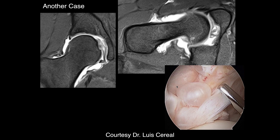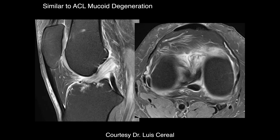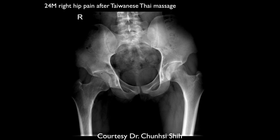Another case demonstrates abnormal signal intensity within the ligamentum teres consistent with chronic degenerative tearing. These ligamentous changes are similar to what is seen throughout the body — the mucoid degeneration resembles that seen in the anterior cruciate ligament. It is essentially the same pathology as ACL degeneration.